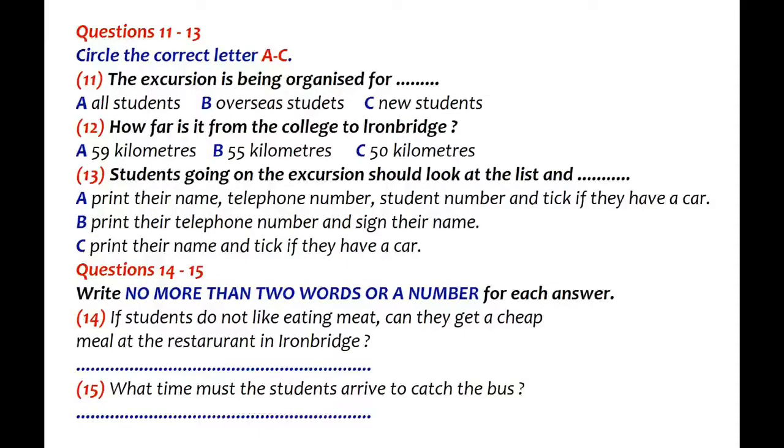The other information I need to give you is about lunch. There's a very nice little restaurant in Ironbridge, which gives a 15% discount to the college when we bring groups. That means lunch is only about £4, and they do good vegetarian meals too, so it's usually no problem for those of you on special diets. But if you prefer to eat your own food, that's fine too, either on the bus or in the park. But I'd encourage you to try the restaurant.